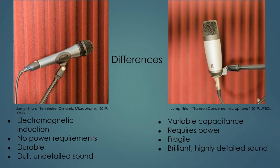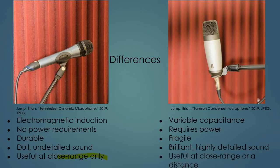Dynamic microphones, unless you're right on top of them, produce a somewhat dull and undetailed sound. Condenser microphones, on the other hand, produce a brilliant and highly detailed character of audio. Dynamic microphones are really only good at close range, while condenser microphones are good at close range or at a distance. Since they are better at capturing highly detailed audio, condenser microphones are often found in the studio, and dynamic microphones are often found on stage.